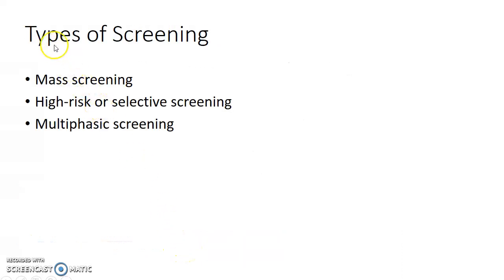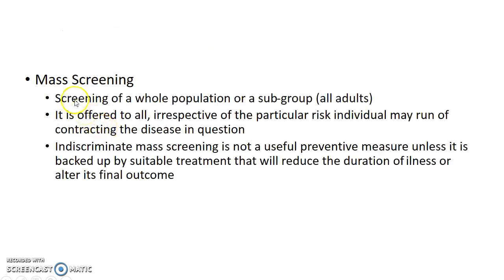Now let us see about the types of screening. There are three types: mass screening, high risk or selective screening, and multiphasic screening. Mass screening is the screening of a whole population or a subgroup, for example all adults. It is offered to all irrespective of the particular risk an individual may run of contracting the disease in question. Indiscriminate mass screening is not a useful preventive measure unless it is backed up by suitable treatment that will reduce the duration of illness or alter its final outcome.